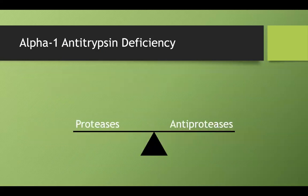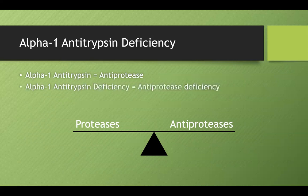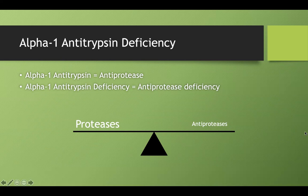In our body, there exists a balance between proteases and antiproteases. You don't want too many proteases because they could overwhelm your defense system and start damaging your own tissue. Alpha-1 antitrypsin is a type of antiprotease. In alpha-1 antitrypsin deficiency, we have a deficiency in these antiproteases, and most of the clinical sequelae — especially in the lungs — arises from a relative increase of proteases that ends up damaging our own tissues.